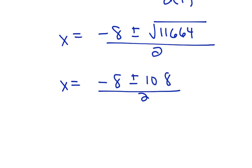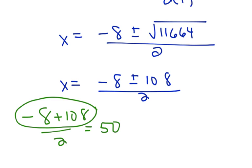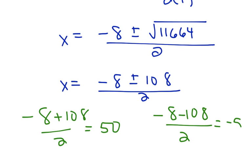Remember that this leads us to two answers. One of the answers is negative 8 plus 108 divided by 2, which is going to give me 50. If you have a graphing calculator like the TI-84 or TI-83, please do this first before dividing by 2. If you type that into your calculator and you don't use parentheses, you will get the wrong answer. The other answer would be negative 8 minus 108 over 2, which would give you negative 58.